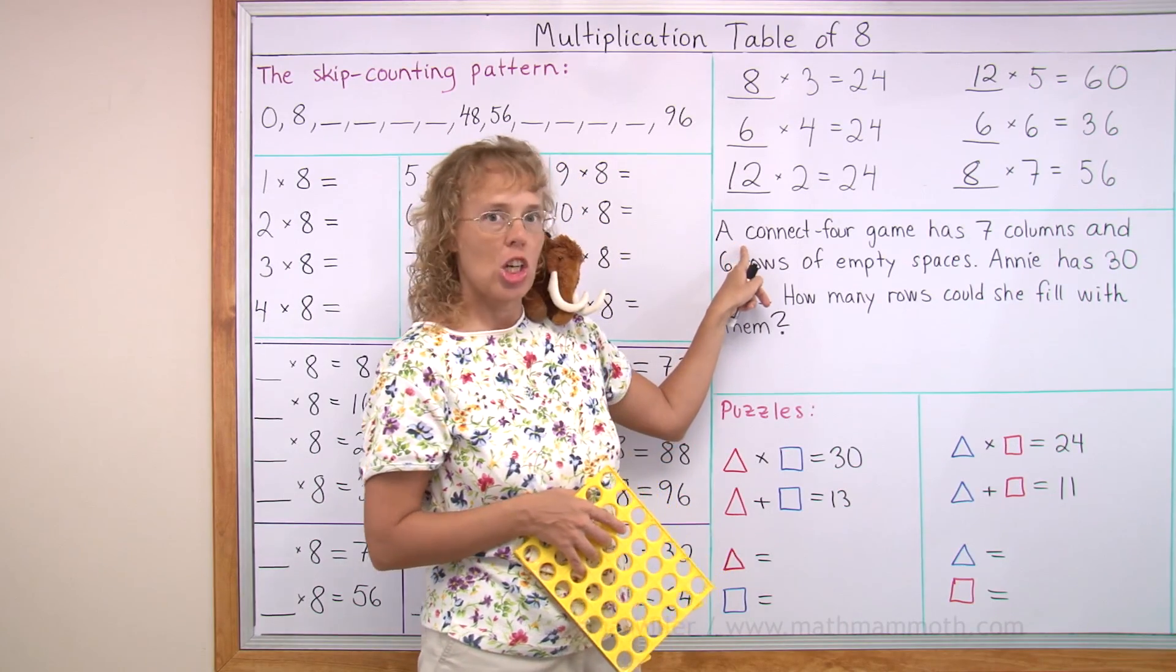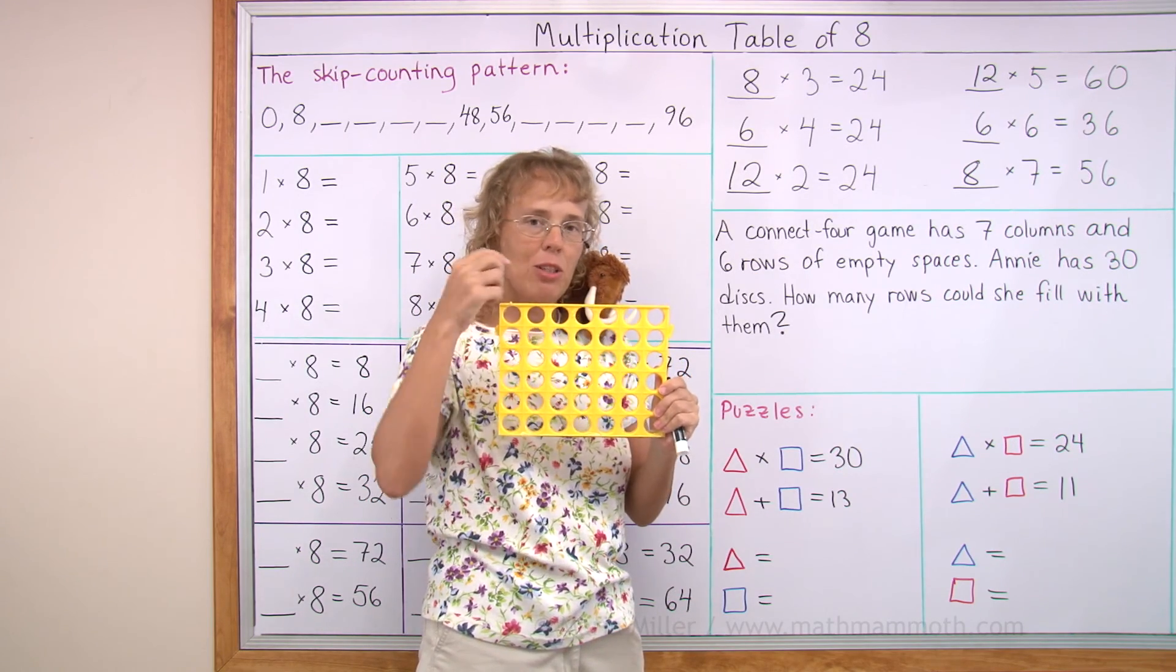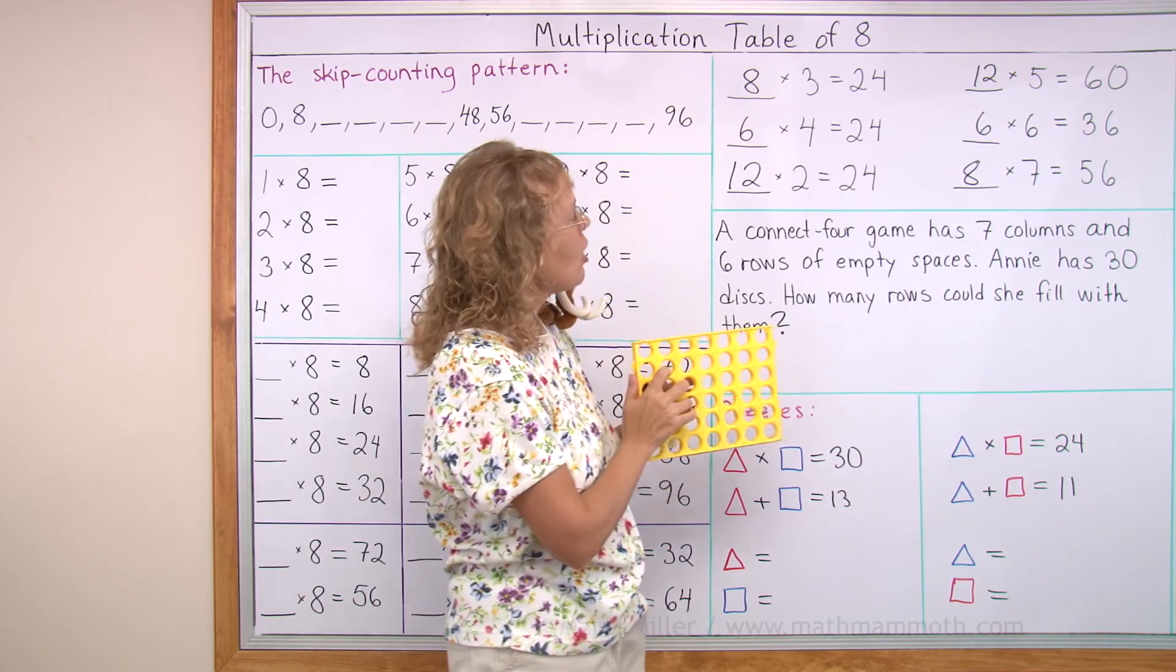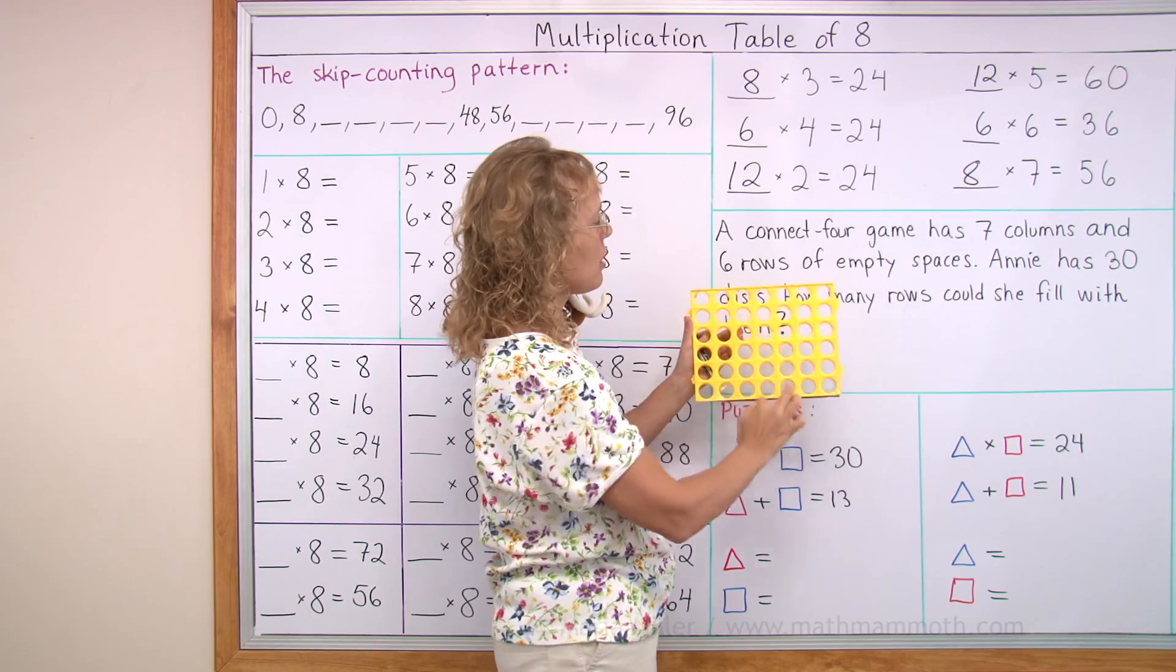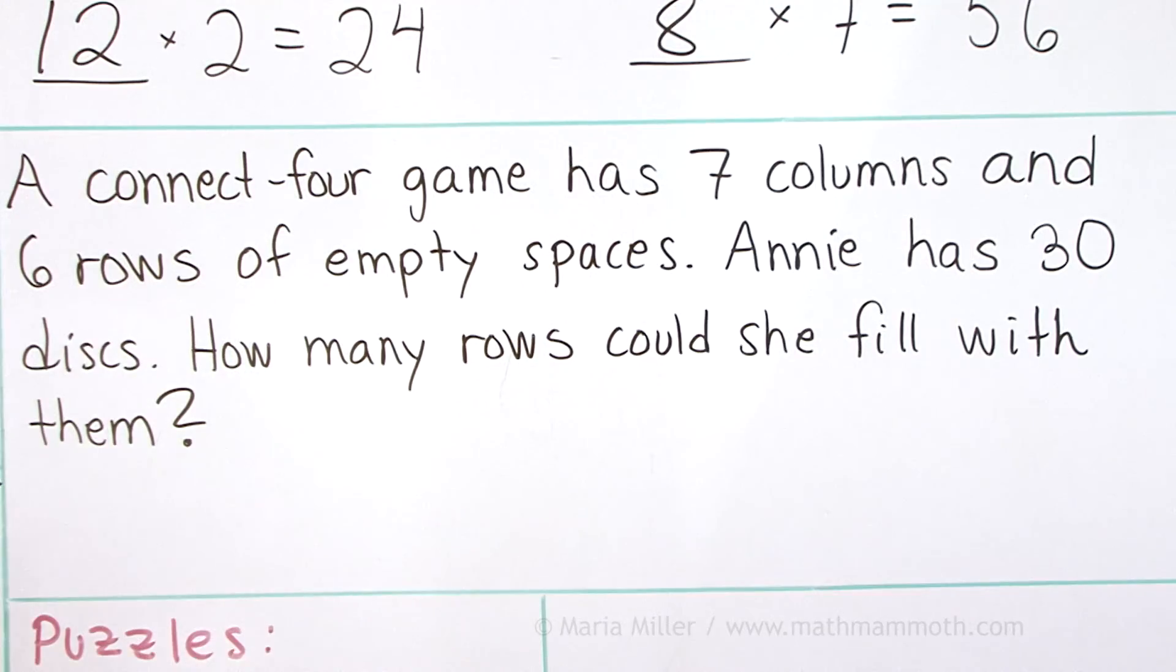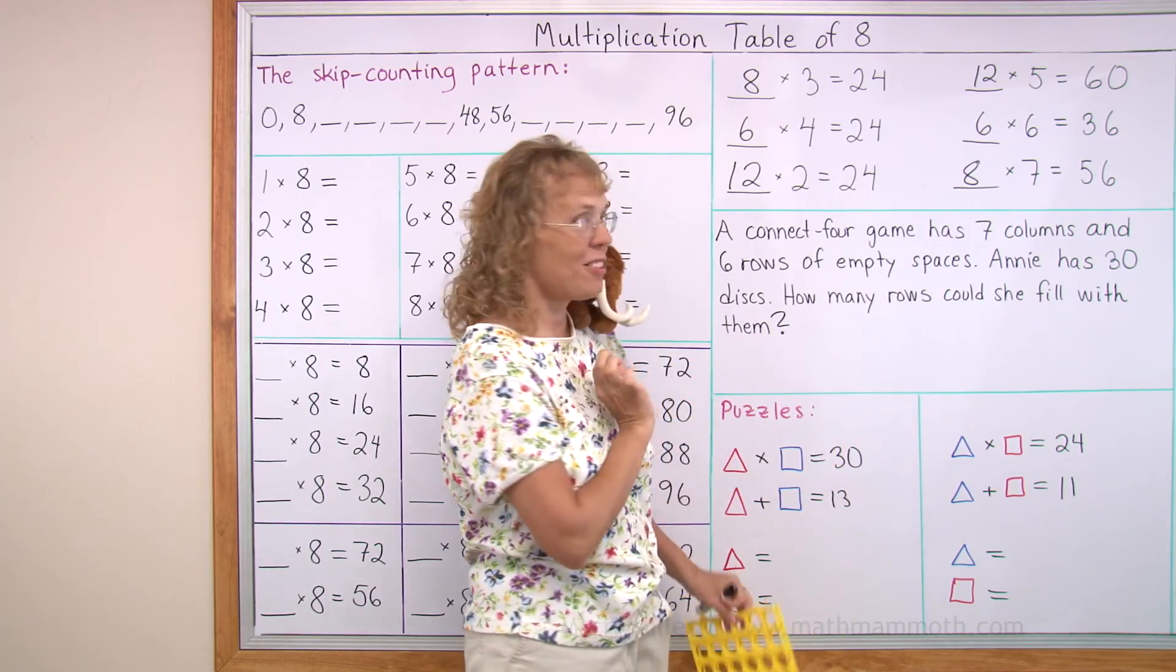This one talks about a Connect 4 game. It's kind of like this, okay? This is a Connect 4 game where you drop discs or circles into it. And Connect 4 game has 7 columns, like this, 7 columns, and then 6 rows of empty spaces. Now, Annie has 30 discs, 30 circles that she could play with. How many rows could she fill with them?